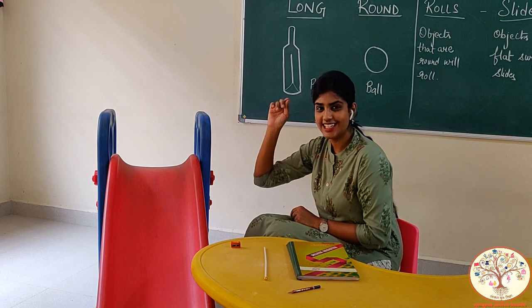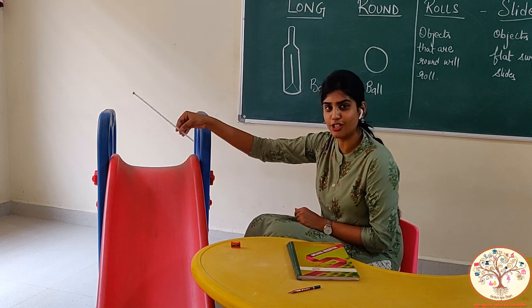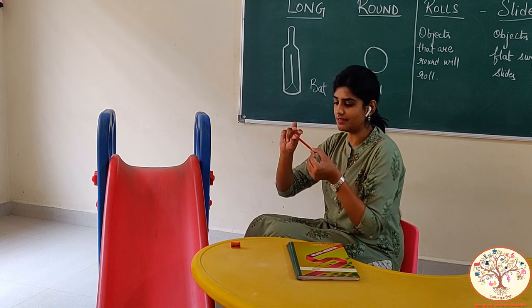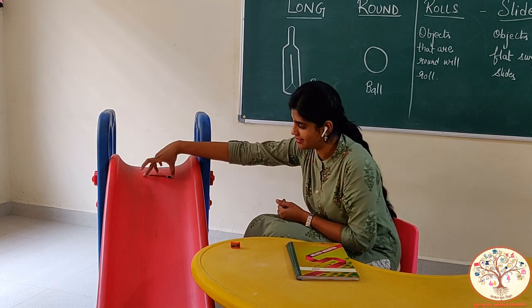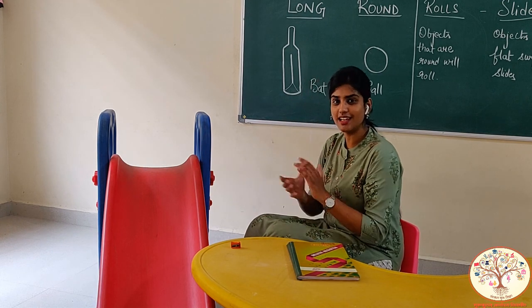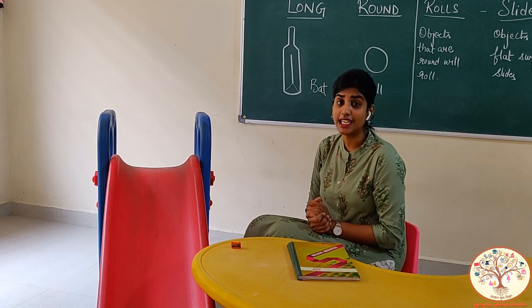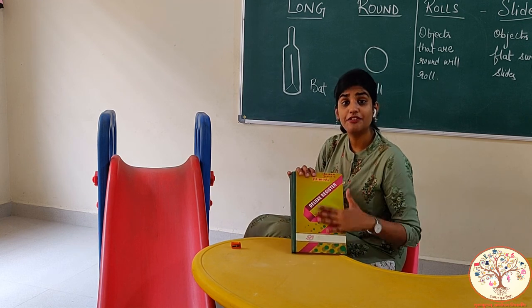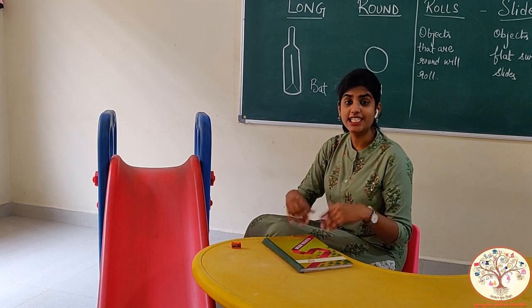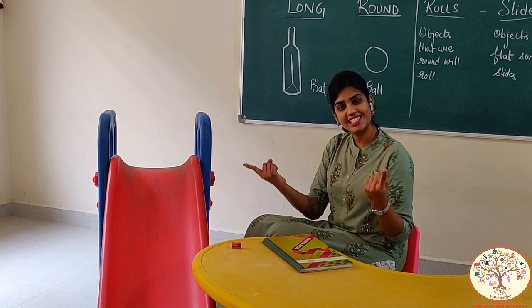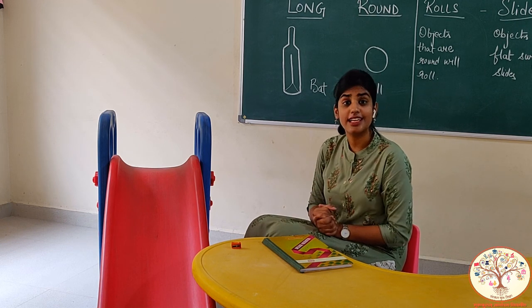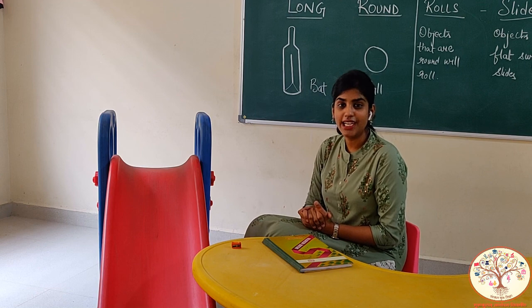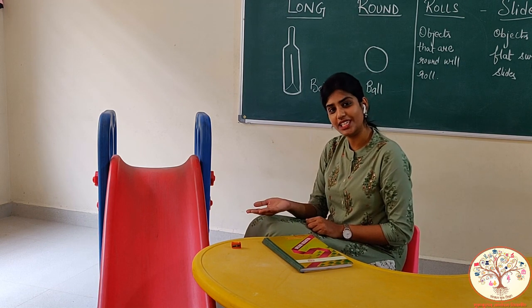Let's check — slide. And pencil rolls. We have learned today that objects that are round will roll. Objects that have flat surface will slide. Some objects have both, so they roll also and slide also. Students, there is one more work for you — do this experiment with various objects and find out whether an object slides or whether an object rolls.